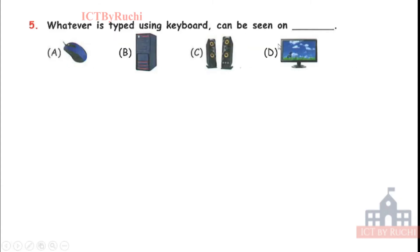Whatever is typed using keyboard can be seen on mouse, CPU, speaker or monitor. Tell me the answer. D, monitor. It is very easy. When we type in a keyboard, we can watch it on a monitor screen.